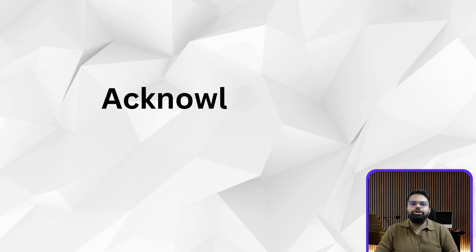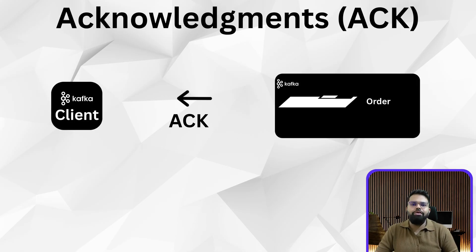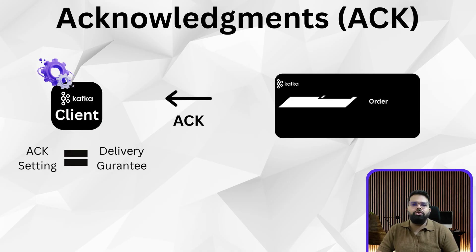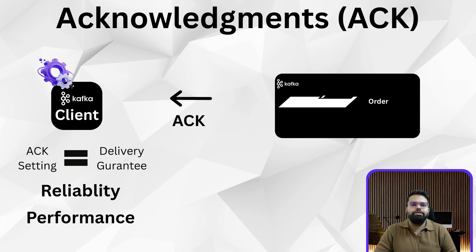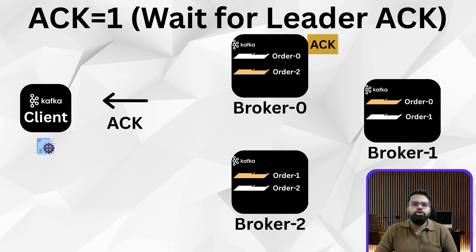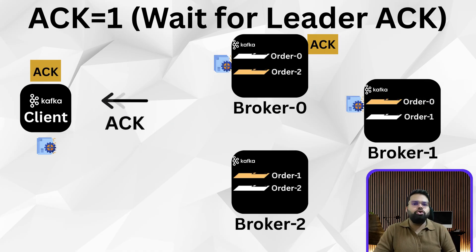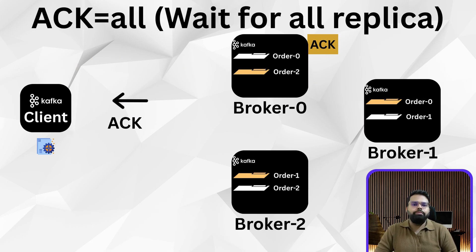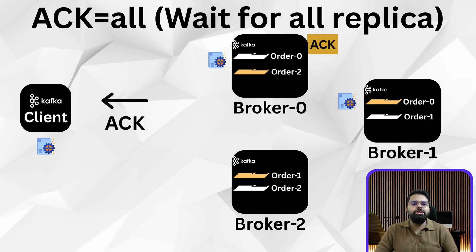But what exactly is an acknowledgement, and why does it matter? An acknowledgement, also known as ack, is a signal from Kafka saying 'message received and safely written.' The number of acknowledgements the producer waits for is controlled by the ack setting, which defines Kafka's delivery guarantee and impacts both reliability and performance. Ack=0 is fire and forget — the producer doesn't wait for any acknowledgement; fastest, but data is lost if the broker crashes. Ack=1 waits for the leader — the producer waits until the leader writes the message to disk, offering a good balance between speed and durability. Ack=all waits for all in-sync replicas to acknowledge — the safest option, ideal for financial, inventory, and mission-critical systems.